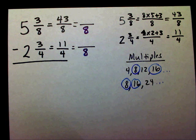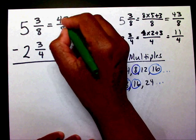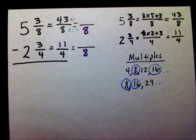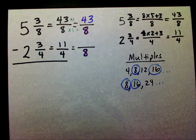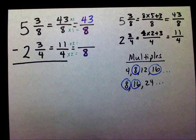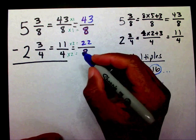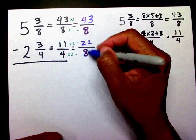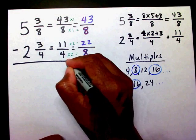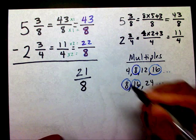Now, just like before, 8 times 1 is 8, and 43 times 1 is 43. Then, 4 times 2 is 8, and 11 times 2 is 22. Now that I have the same denominator, I can subtract. I have 43 minus 22, which gives me 21, and I keep my 8s — so 21 eighths.